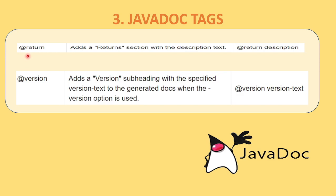The next Javadoc tag is @return. Return is mostly used inside functions because functions return values. When you use the @return Javadoc tag, it will return a section with the description text — @return will come first and then the description of what type of data your function is returning, such as integer or float. There is also @version — if you have generated a Javadoc for your Java project and you use the @version tag, it will tell which version of Javadoc you are using, and the actual version number will be displayed.